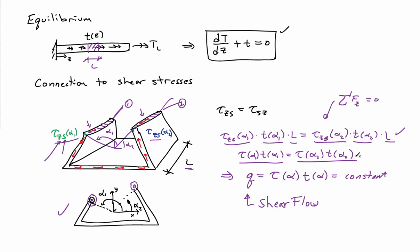So the product of the shear stress times the thickness is independent of where I make the section cut — I can make it at alpha_1 or alpha_2 and always get the same result. So tau times t, no matter what alpha is, is always going to be a constant. By convention we call that constant q, and it has a name: it's called the shear flow. This is a very important property that comes to us from the thinness assumption, whereby we assume the shear stresses are constant across the thickness.